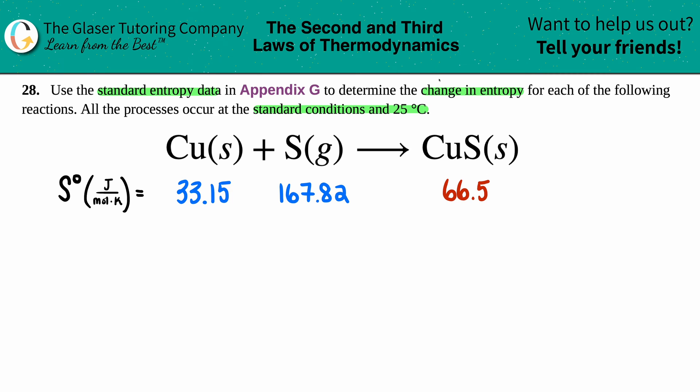All we have to do is just find that change in entropy. Change in entropy is a delta S value. Change is that delta, entropy is always S. Now, if we are using the back of a textbook, which in this textbook is Appendix G, we're using those standard values. It's going to be a delta S notch. Anytime that you see that notch in the upper right hand corner, that means that you're using the Appendix values and that it's at standard conditions.